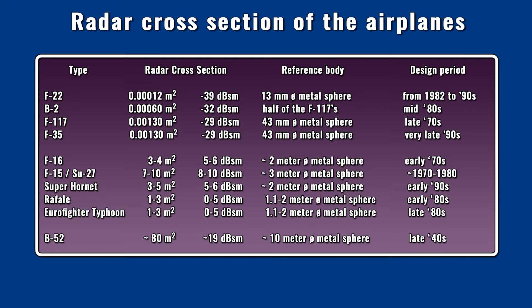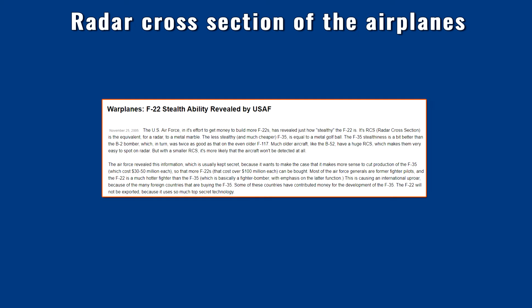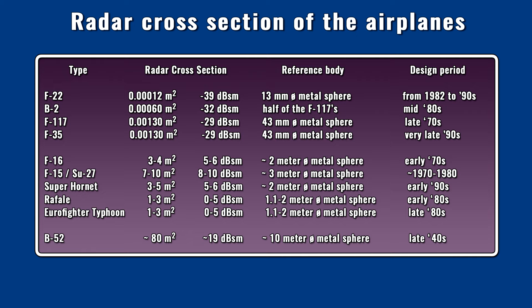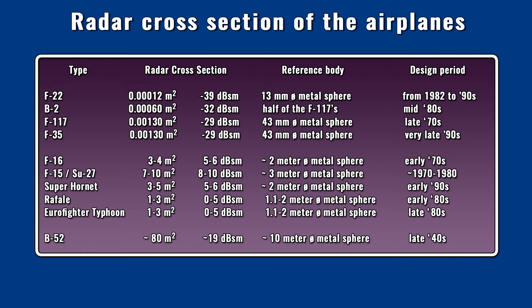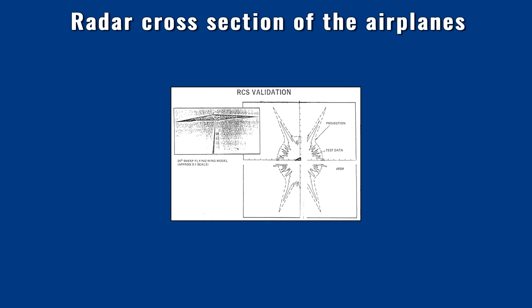An official statement from the US Air Force in 2005 described the F-22's minimum radar cross-section as comparable to a 30 mm diameter metal ball. The radar cross-section can be calculated using this input, which gives us minus 39 dBsm or 0.00012 square meters. In the case of the F-35, the given reference was a golf ball-sized reflective object. Considering a sphere with a diameter of 43 mm, we get minus 29 dBsm or 0.0013 square meters. The radar cross-section of the B-2 is half of that of the F-117, which means a 3 dB smaller value — this is minus 32 dBsm or 0.0006 square meters. These values provide more than enough input for evaluating the basic impact regarding applied tactics of stealth planes and their benefits.